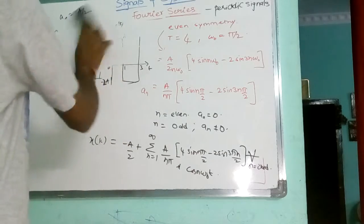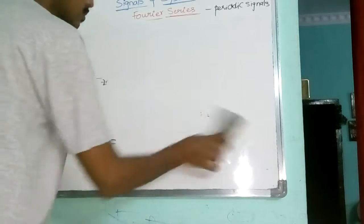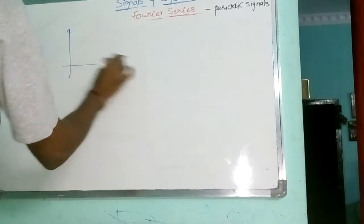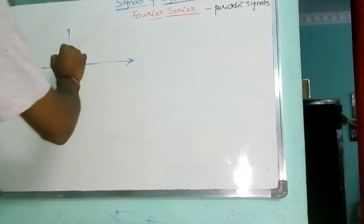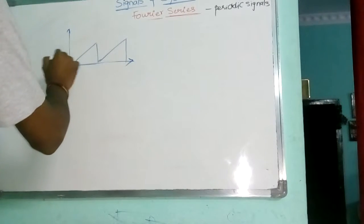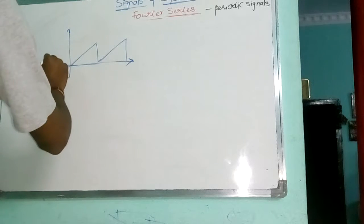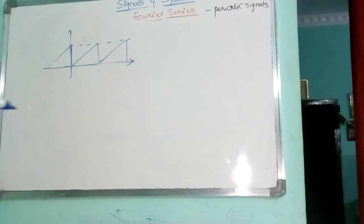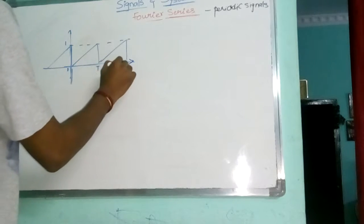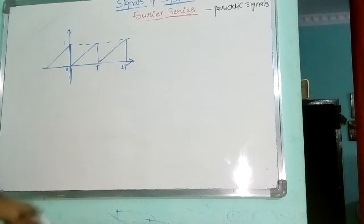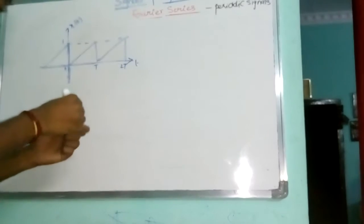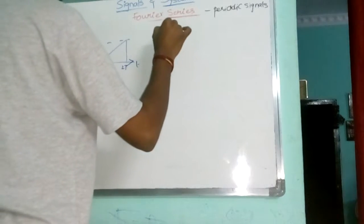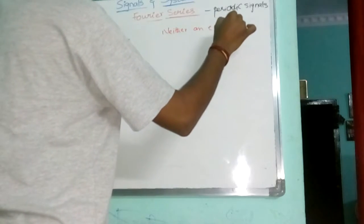Now, I'll take another example. Now, I'll take another example here. This is the signal. These are at intervals of T, 2T. Now, they are asking us to find out the Fourier series of this. By looking at this, what we can tell about the symmetry is, it has neither an even nor an odd argument.